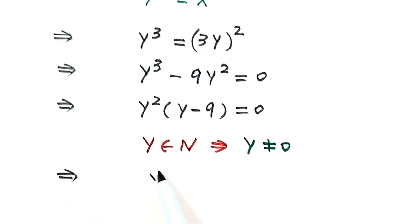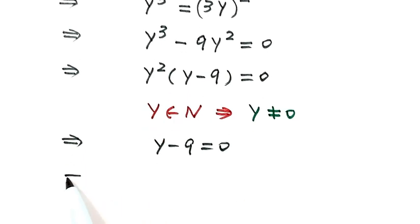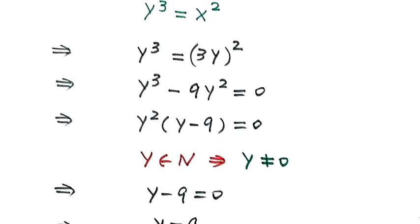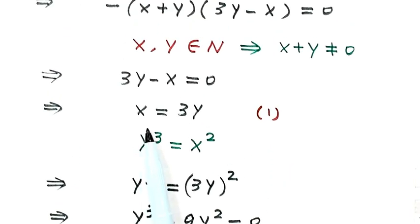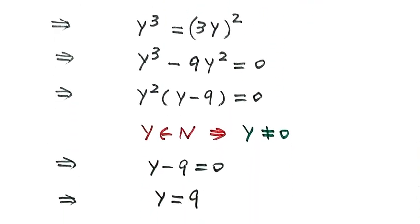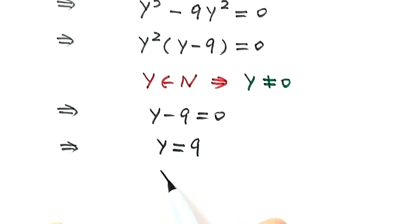Then y minus 9 equals 0, so y equals 9. Then from result 1, x equals 3y. Since x equals 3y, replace 9 here. That's 27.